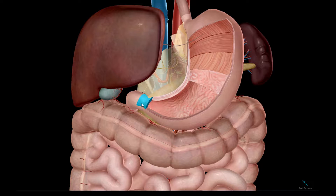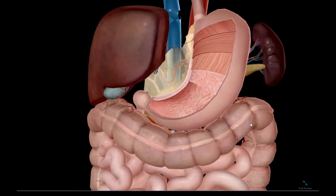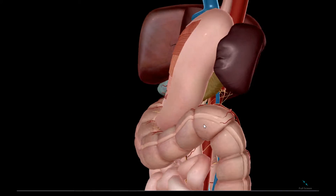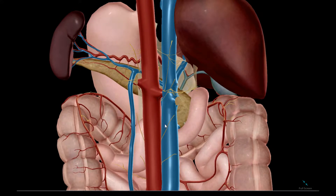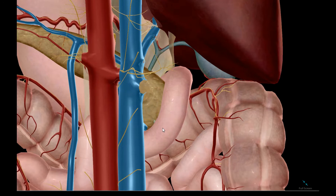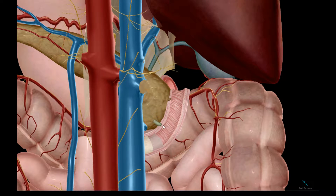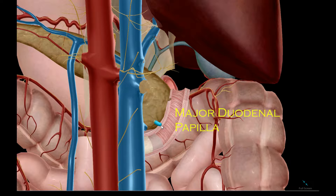This sphincter is called the pyloric sphincter. We continue down the duodenum. We have the feature inside the duodenum where the common bile duct and the main pancreatic duct merge and form the major duodenal papilla.